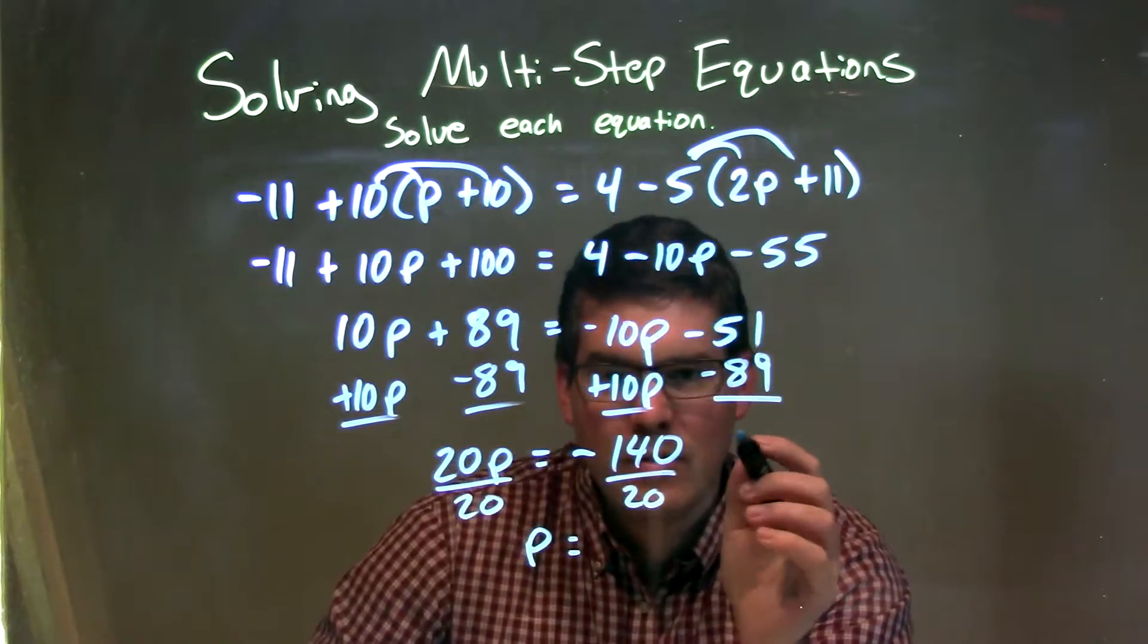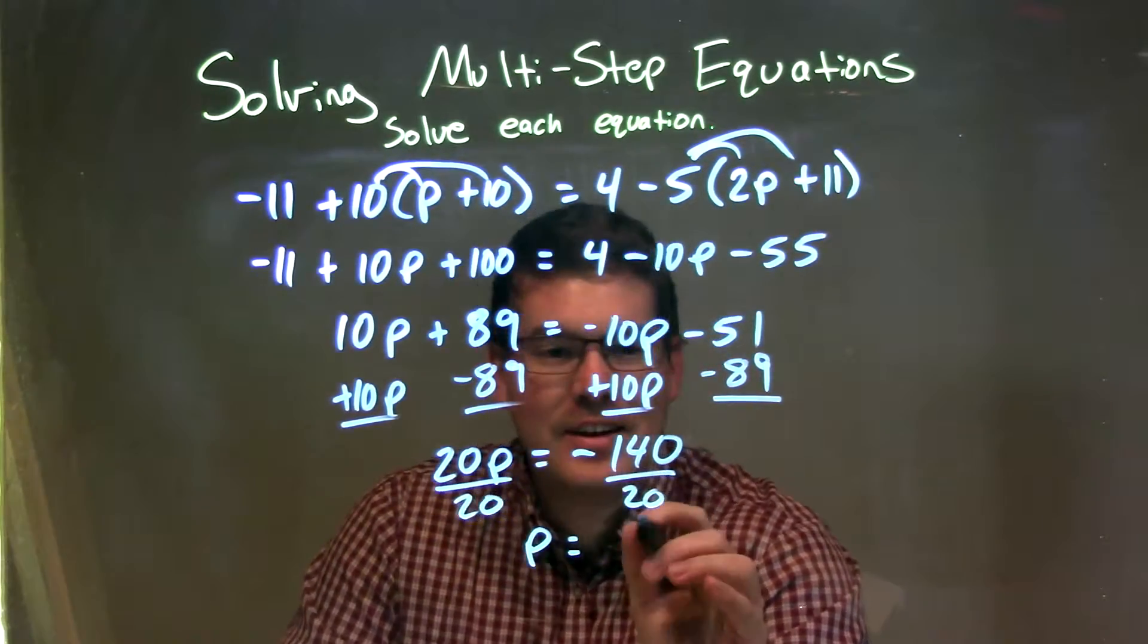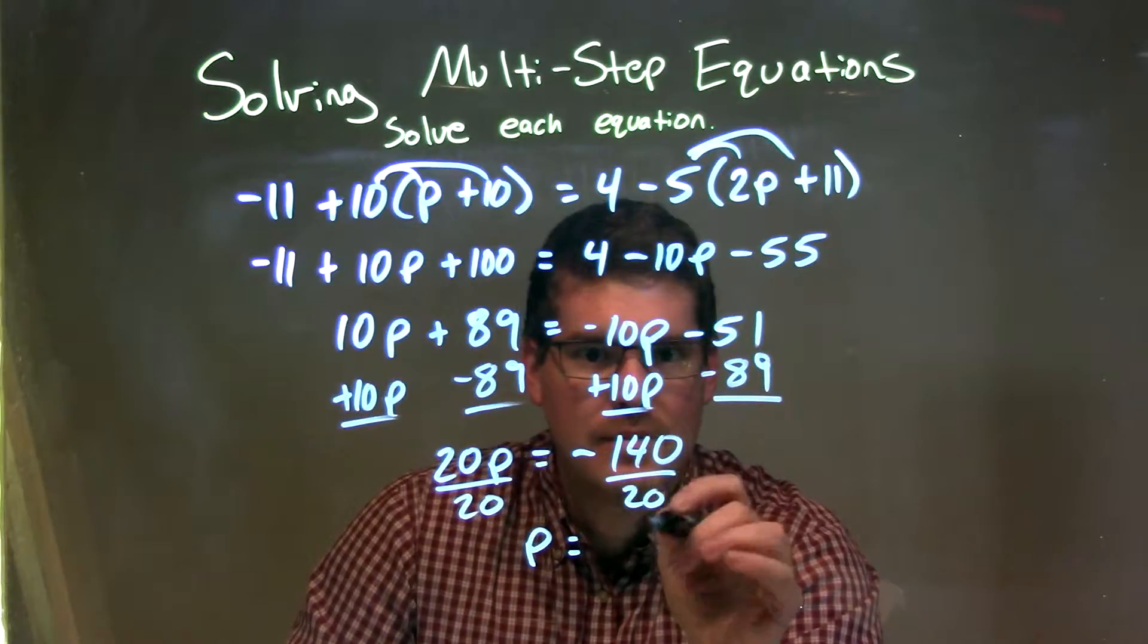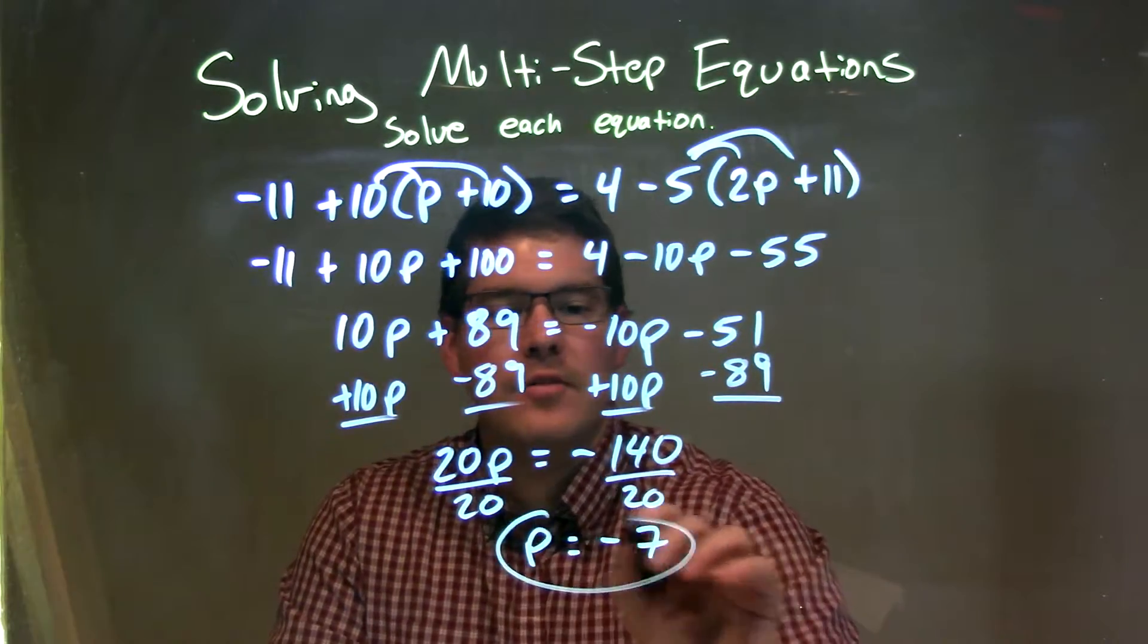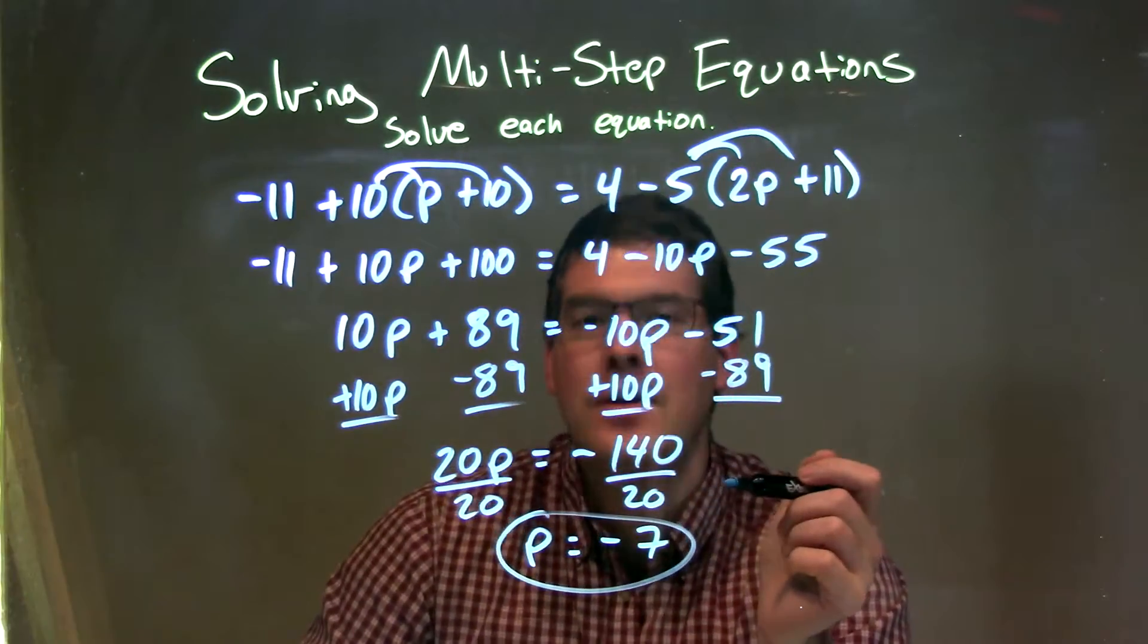20 goes into negative 140 negative 7 times. And so our final answer is p equals negative 7.